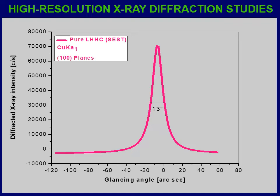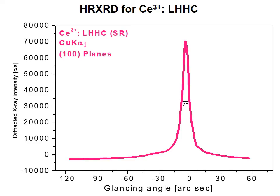High resolution X-ray diffraction analysis of the pure crystal grown by slow evaporation solution technique shows a single peak at 13 arcseconds, meaning the crystal is free from structural grain boundaries. HRXRD of the CE3+ ion-doped L-histidine hydrochloride monohydrate single crystal shows a single sharp peak with full width at half maximum of 7 arcseconds, indicating very good crystalline quality compared to the pure crystal.